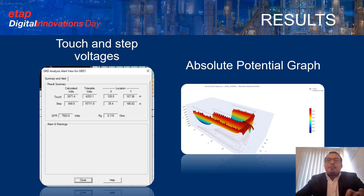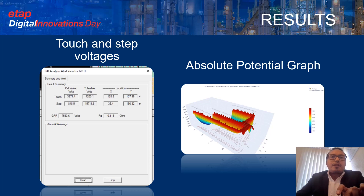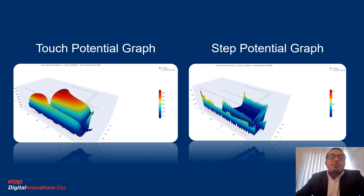In this slide, we can see a plot of the absolute potential in the grid — red color where voltages are higher and blue where voltages are lower. We can also see the touch potential graph, where the maximum voltage level is 3,871.4 volts — this potential exists when a person is standing in contact with the ground structure in the substation. The step potential plot shows a maximum voltage level of 848.5 volts, which could be experienced by a person walking a distance of one meter without contacting any grounded object.